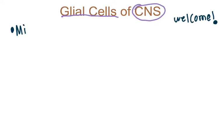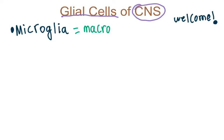We're going to go over the four basic glial cells of the central nervous system. The first one is microglia. Microglia are pretty much macrophages — specialized macrophages inside the brain and spinal cord, inside the central nervous system.